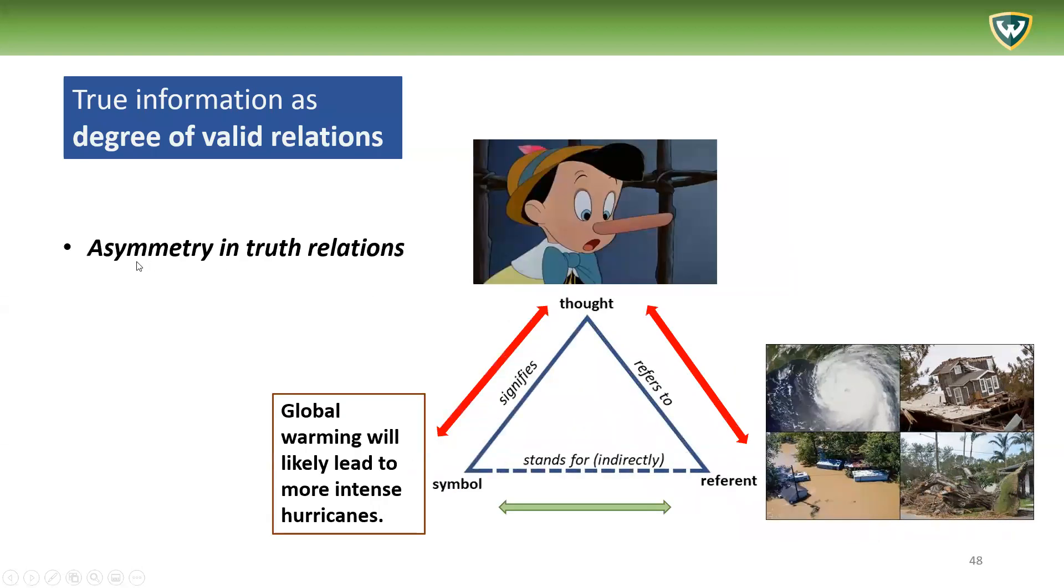Now, notice that we can also have asymmetry in truth relations. So maybe there's a statement out there - 'global warming will likely lead to more intense hurricanes' - and this has a true relation to actually what happens in the world. But depending on who is doing the interpretation, the thought or the mental model may not be there. So the symbol actually stands for, correctly stands for the objective reality, but the mental model by someone may not actually be relating with the symbols well.